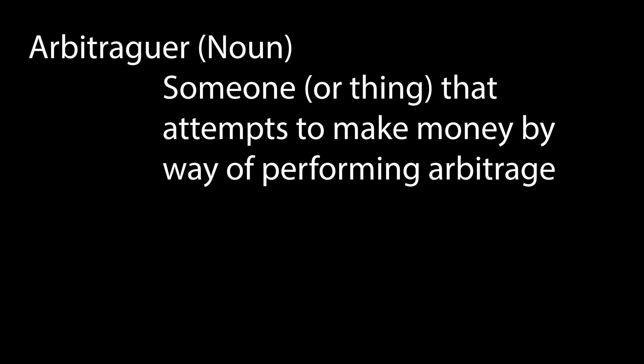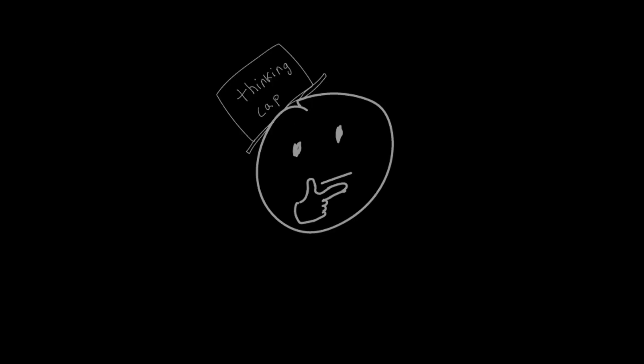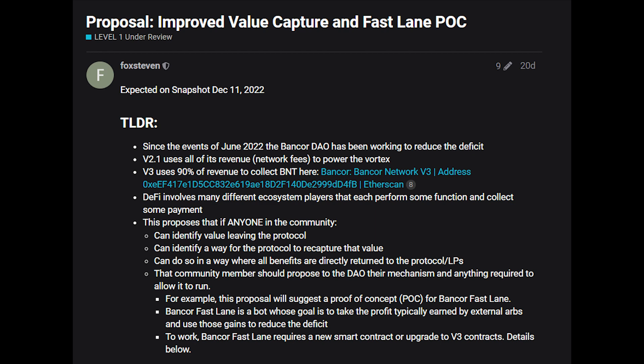The point is that price discrepancies allow for users to capture value by making savvy trades. So here's a thought: why don't DEXs make their own arbitrage bots and have those bots make money for their liquidity providers? This is exactly what the Bancor Fastlane proposal is — a proposal to create an arbitrage bot which will capture value that would be leaving the platform, and instead redirect that value to the LPs.